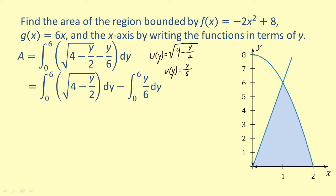Notice that in the first integral, we have a composition of functions. So let's let u equal the radicand, 4 minus y over 2. Differentiating, we get du equals negative one-half dy.